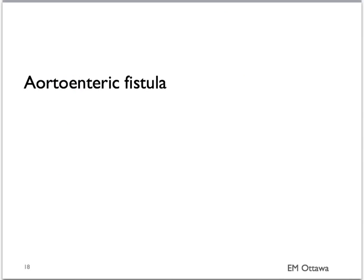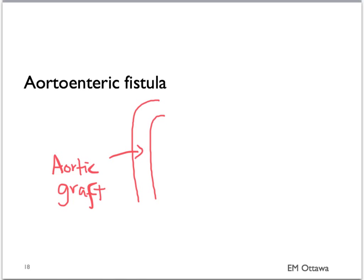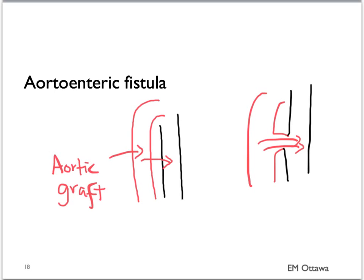A rare but disastrous cause is called an aortoenteric fistula. It is caused by a previous surgical graft in the aorta that has eroded into the GI tract, so blood now flows from the aorta into the GI tract. As you can imagine, the bleeding will be very brisk. On history, you want to elicit a history of repair of the aorta.